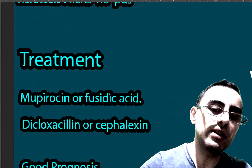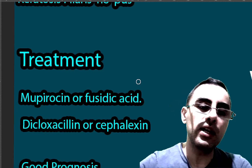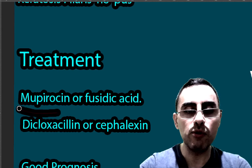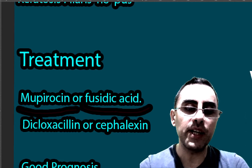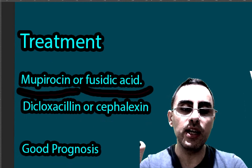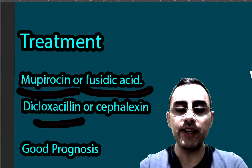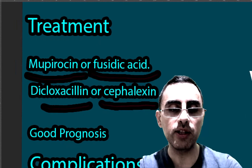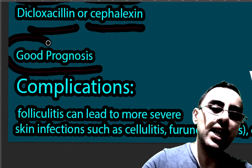Treatment usually starts with topical antibiotics, for example mupirocin or fusidic acid. Sometimes, as a second-line treatment, doxycycline or cephalexin is needed — these are systemic antibiotics.